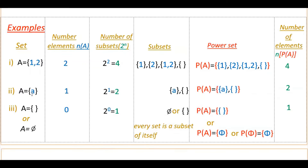In the next example, there is only one element in set A. So the number of subsets is 2 to the power of 1, which equals 2. You can write two subsets: the set itself and the empty set. If you write these two subsets inside the braces, you get the power set. So the power set has two elements.